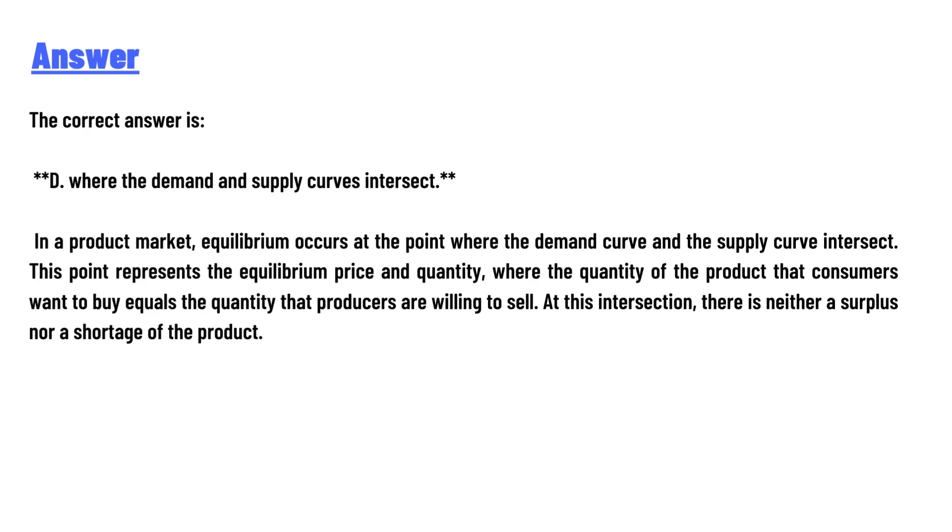Where the quantity of the product that consumers want to buy equals the quantity that producers are willing to sell. At this intersection, there is neither a surplus nor a shortage of the product. So that's the correct answer to the question.